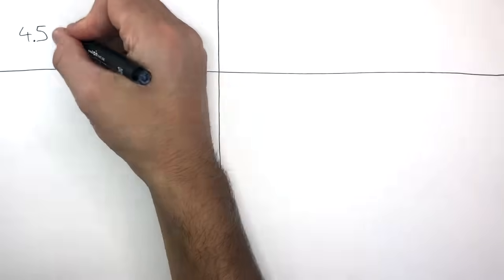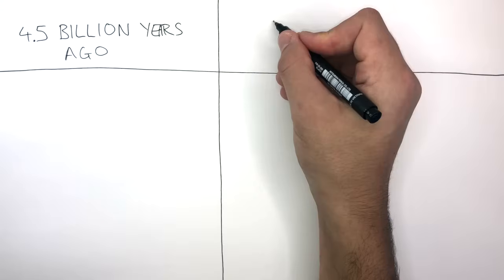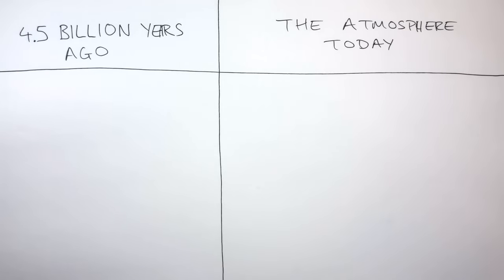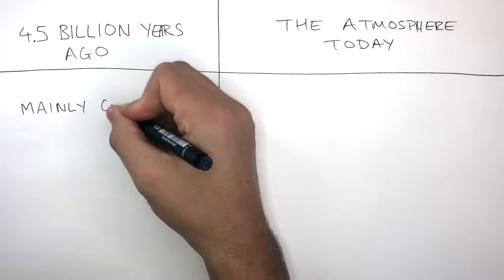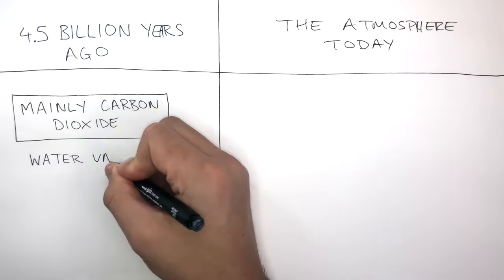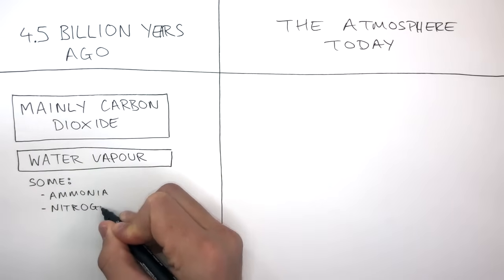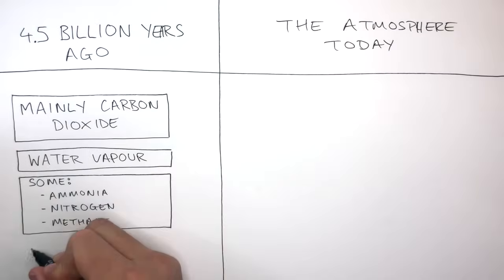This table will compare the gases in Earth's early atmosphere. 4.5 billion years ago, Earth's early atmosphere was mainly carbon dioxide, water vapour, and some ammonia, nitrogen, and methane. There was no oxygen.